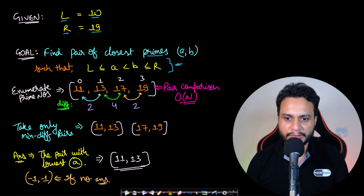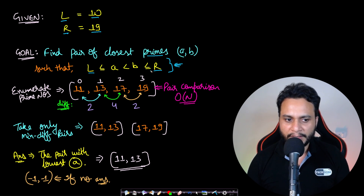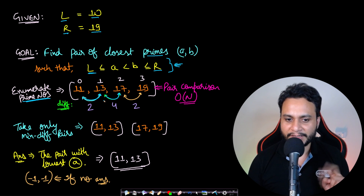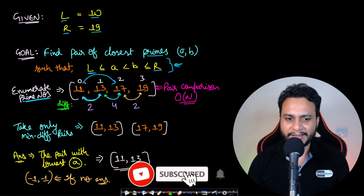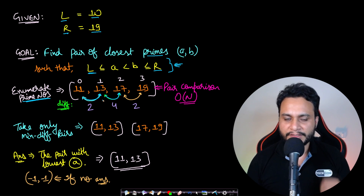What we can think is: enumerate all the prime numbers in the range of L to R, iterate over all numbers, and check if each is prime using a primality test. After doing the primality test in the range 10 to 19, we get 11, 13, 17, and 19. It makes sense to compare only adjacent numbers — comparing 11 with 17 doesn't make sense as the difference will be larger. The adjacent difference values are 2, 4, and 2.